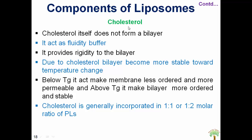Now coming to the second component: cholesterol. Cholesterol is not able to form a bilayer alone, but it acts as a fluidity buffer. It provides rigidity to the bilayer, and due to cholesterol the bilayer becomes more stable toward temperature. Below the glass transition temperature (Tg), the membrane becomes less ordered and more permeable; above Tg, it makes the bilayer more ordered and stable. Cholesterol can generally be incorporated in a 1:1 or 1:2 molar ratio compared to phospholipids.